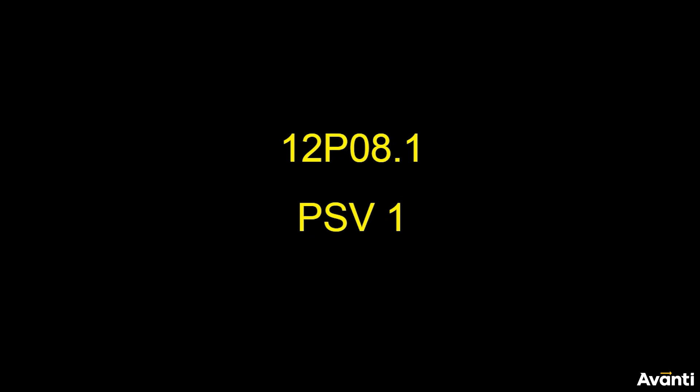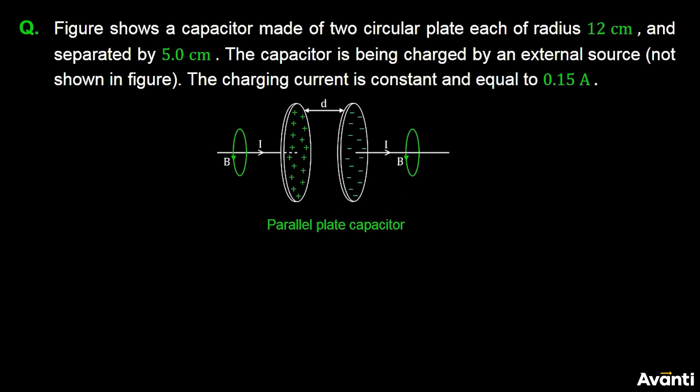Let's do PSV-1. The question is: Figure shows a capacitor made of two circular plates, each of radius 12 cm and separated by 5 cm. The capacitor is being charged by an external source not shown in the figure.